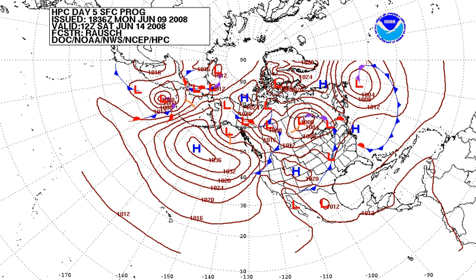Atmospheric pressure, sometimes also called barometric pressure after the sensor, is the pressure within the atmosphere of Earth or that of another planet. The standard atmosphere symbol ATM is a unit of pressure defined as 1013.25 millibars. The ATM unit is roughly equivalent to the mean sea-level atmospheric pressure on Earth.